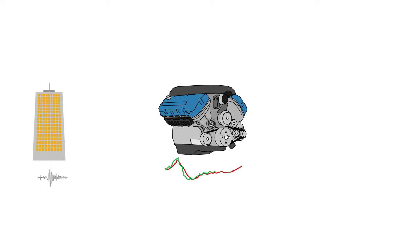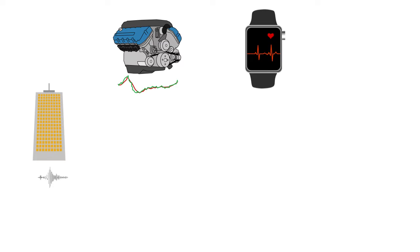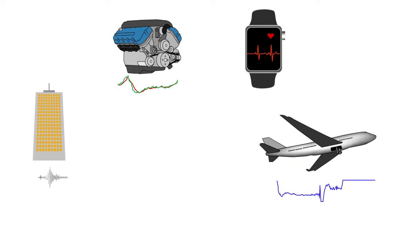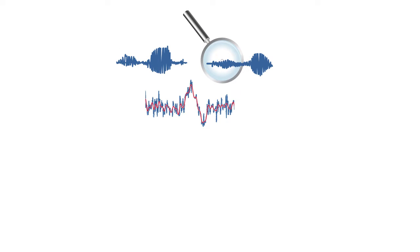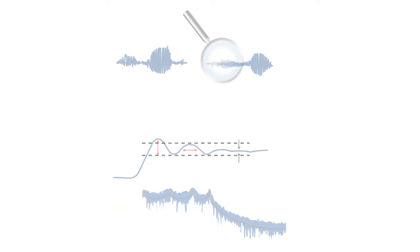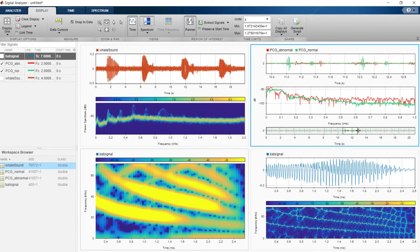Signal processing is essential to a wide range of applications across a variety of industries. To implement these applications, you often need to pre-process and compare signals, design digital filters, transform signals, perform measurements, and detect patterns and events. Signal Processing Toolbox can help you with these tasks.